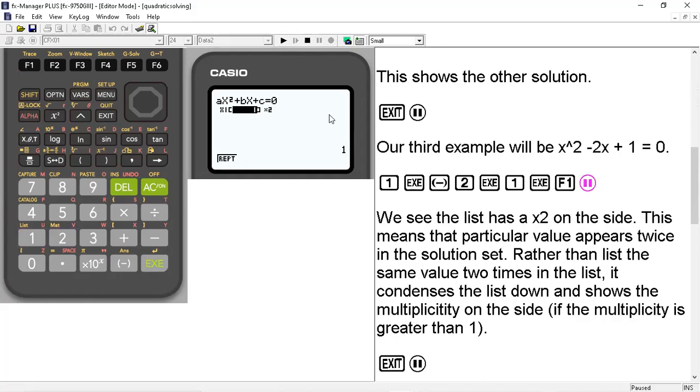And in this case, we get this kind of times 2 little thing showing off to the side here. And what this means is that particular value appears twice in the solution set. So rather than list the same value two times in the list, it condenses the list down and shows the multiplicity on the side if the multiplicity is greater than 1. So in this case, we have the solution x = 1, but it appears twice or two times in the solution set.